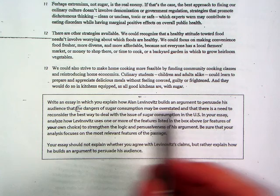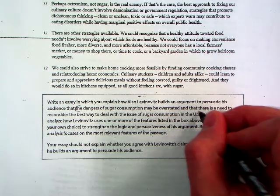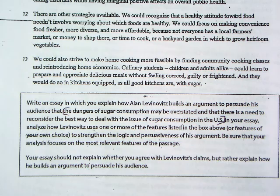It always starts out the same way: write an essay in which you explain how the author builds an argument to persuade his audience. Everything that follows is the thesis. The thesis is against the dangers of sugar — specifically, that the dangers of sugar consumption may be overstated. People have complained about how dangerous sugar is to such an extent that it's overblown.